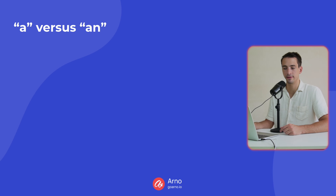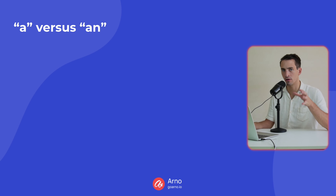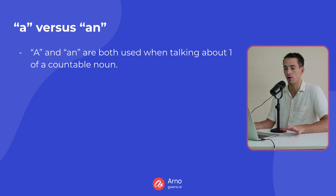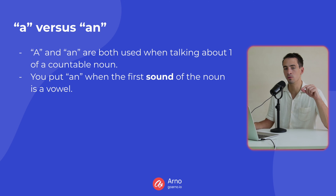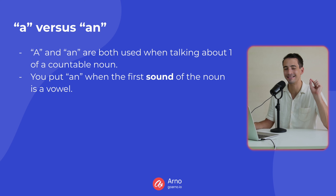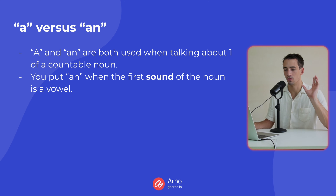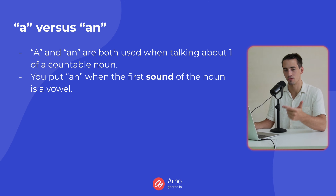The other topic to cover quickly is 'a' versus 'an.' Many non-native English speakers struggle to understand when to use 'a' and when to use 'an.' Both are used when talking about one of a countable noun — 'I have a car,' 'I have an apple.' The rule is that you put 'an' in front of a countable noun when the first sound of the noun is a vowel, because it sounds better when we speak it.